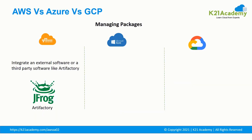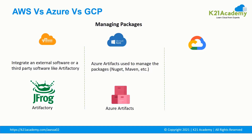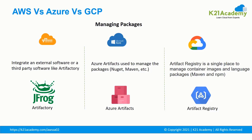Now, managing packages. Any software project needs a package manager — for example, if you are working on Angular or any Node-based framework, you will need Node Package Manager. In AWS, you need to integrate external or third-party software like Artifactory. In Azure, there is Azure Artifacts, used to manage packages like NuGet and Maven inside the Azure portal. In Google Cloud Platform, the Artifact Registry is a single place to manage container images and language packages like Maven and NPM. In terms of managing packages, Azure and GCP have their own built-in tools, whereas AWS depends on third-party software.